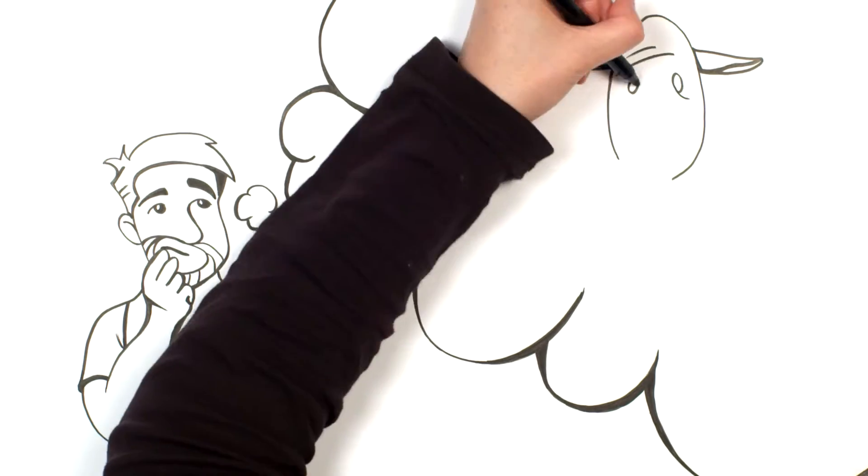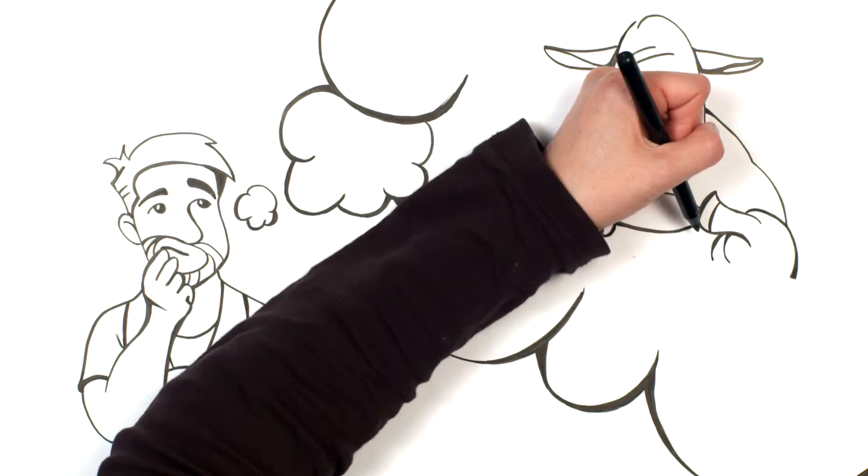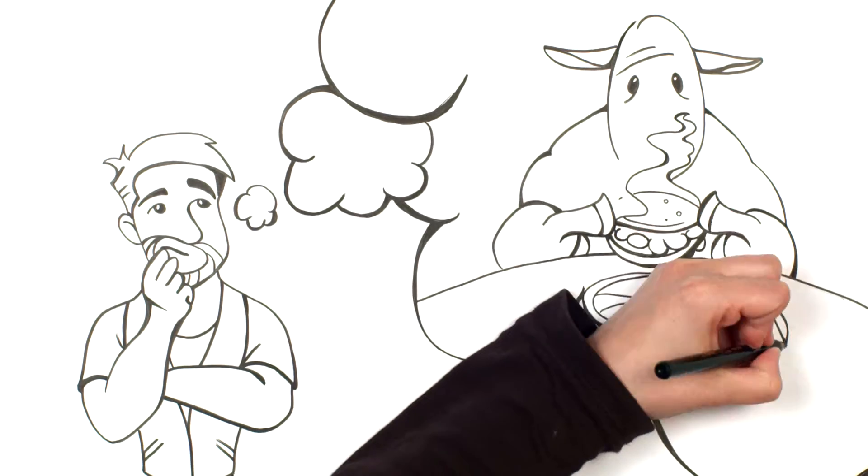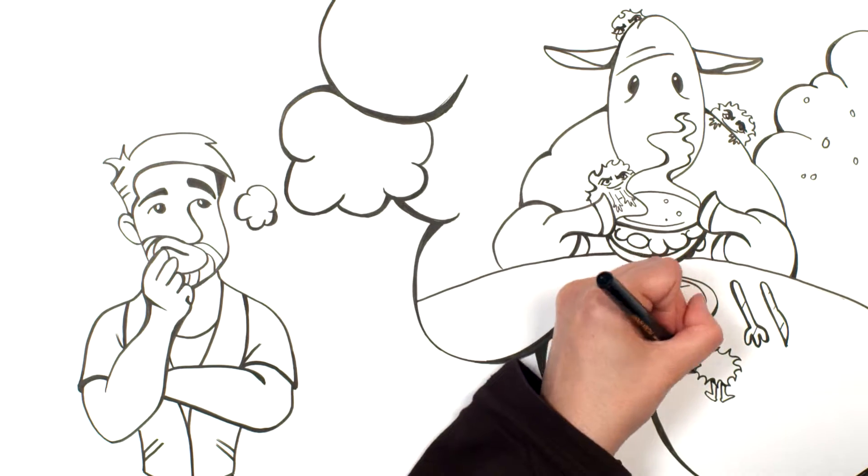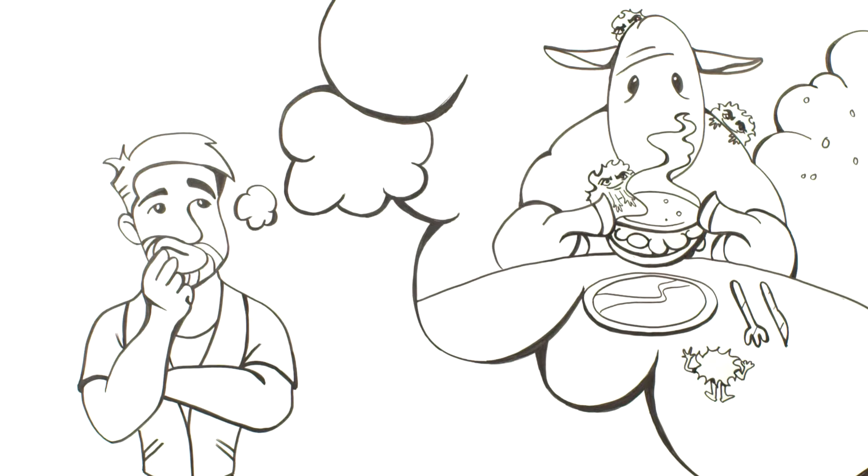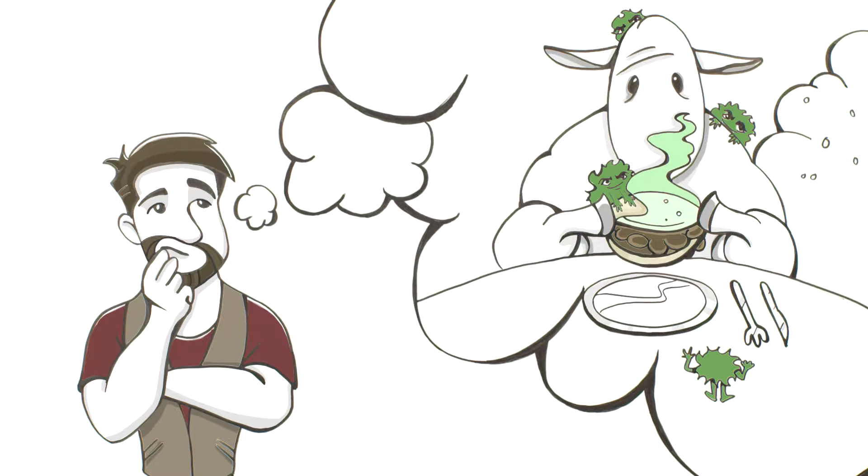So how did my flock wind up getting Johne's? For Johne's, the first weeks of a lamb's life are most important. My vet told me that most lambs get infected with MAP by eating or drinking it. They have a manure meal, as my son likes to say. Gross.